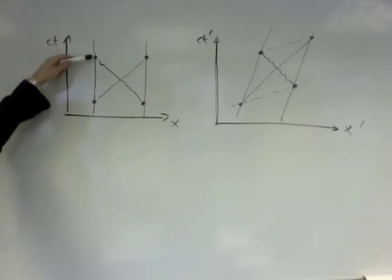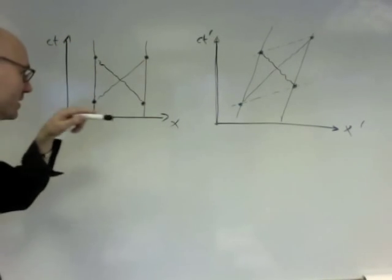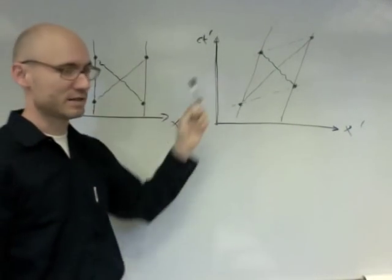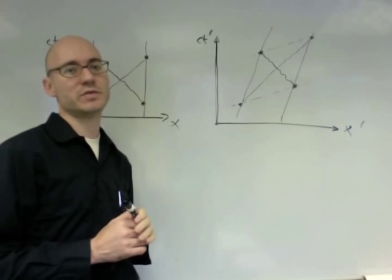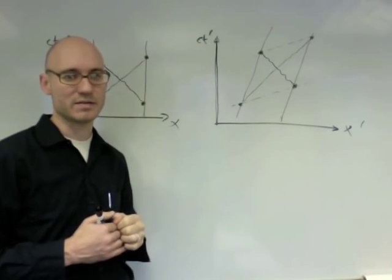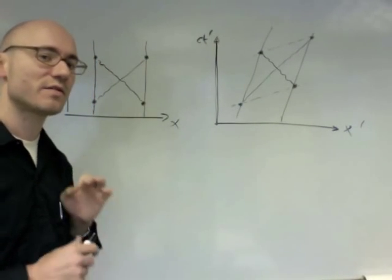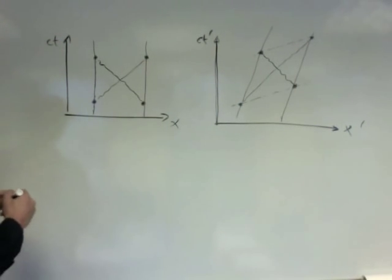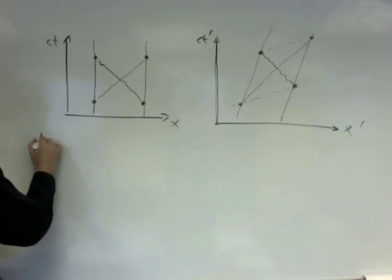And these two events, which were co-spatial in this frame, not only become non-co-spatial in this frame, but also happen at different, happen with a different time interval between them. Space and time begin mixed up. So it makes sense to think about the possibility that we could generalize the vector to a four-vector.